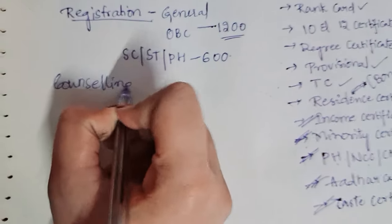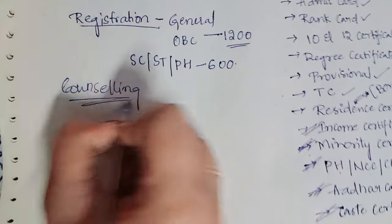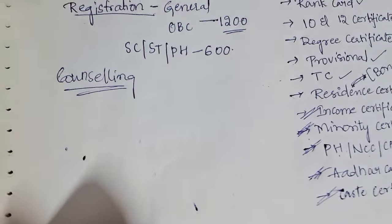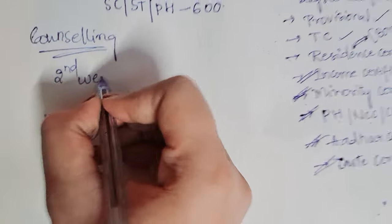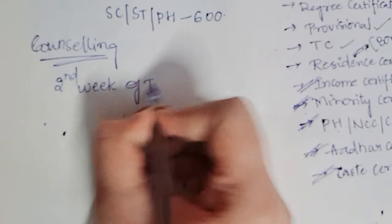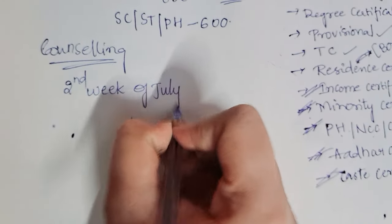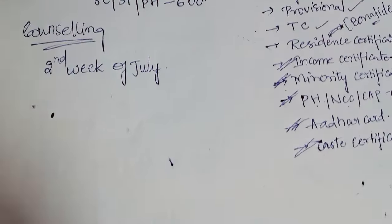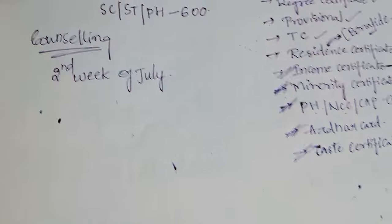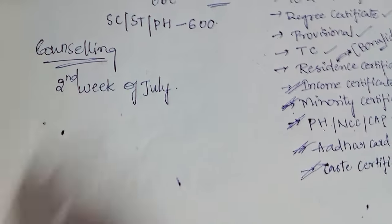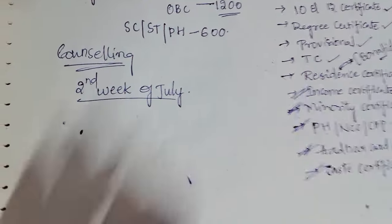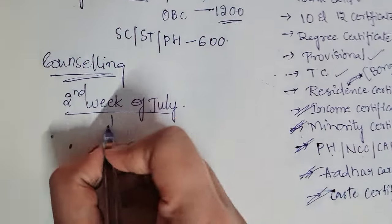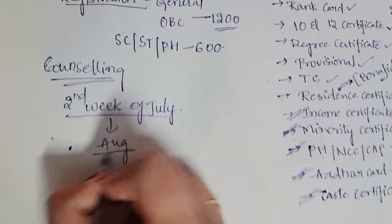At the counseling center, you have to submit your original certificate set and two xerox copies. Regarding the counseling schedule, counseling will be held in the second week of July. Dates are not yet confirmed, but it will take the whole of July and August, which covers your two counseling phases.